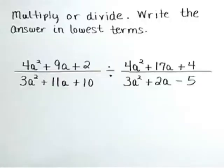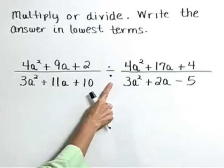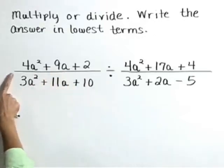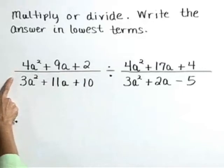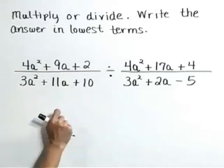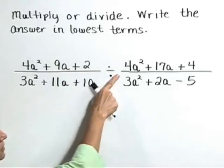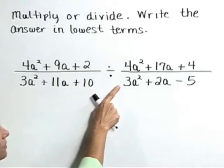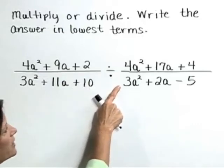Multiply or divide. Write the answer in lowest terms. Here we have a division problem where we have the rational expression 4a squared plus 9a plus 2 over 3a squared plus 11a plus 10 divided by 4a squared plus 17a plus 4 over 3a squared plus 2a minus 5.